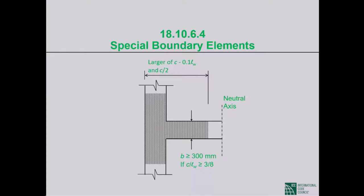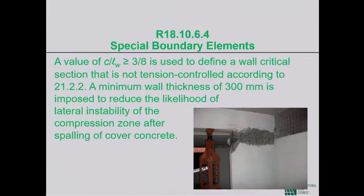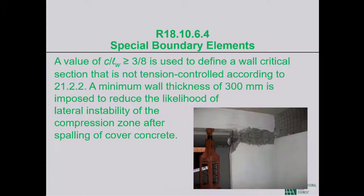So the minimum is 1/16th of the unsupported height subject to a minimum of 12 inches, but the 12-inch minimum applies only to shear walls that are not necessarily tension-controlled. The commentary clarifies: a value of C ≥ 3/8 L sub W defines a critical section not tension-controlled; a minimum wall thickness of 300 mm is imposed to reduce the likelihood of lateral instability of the compression zone after spalling of cover concrete.